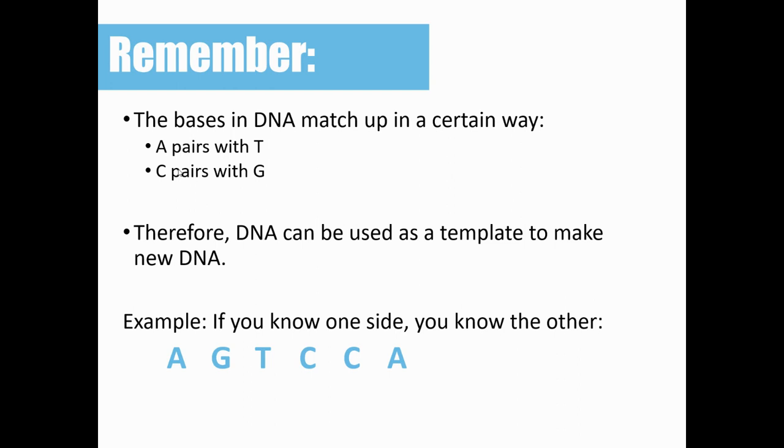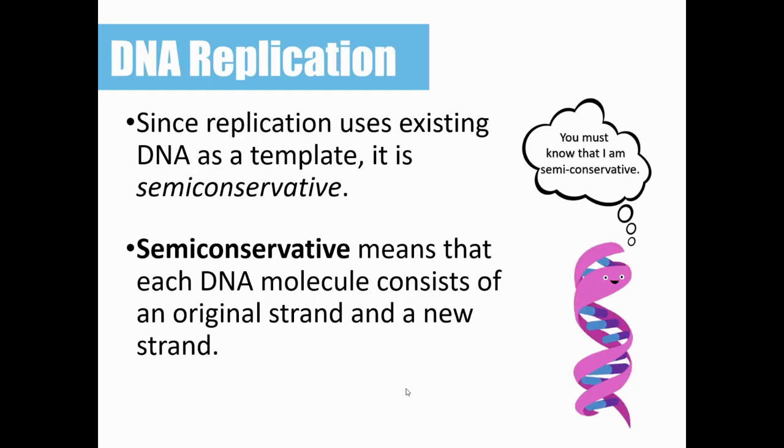All right, so again, you've got to know your base pairing rules. So A pairs with T, we're talking about DNA, C pairs with G. And so what we know is DNA during replication, DNA can be used as a template to make new DNA. And so if you're following along with my notes, there's a place on your notes where I give you a strand of DNA, and I ask you to write the complementary strand using your base pairing rules. So pause the video and take just a second to do that. And then you should have something that looks like this.